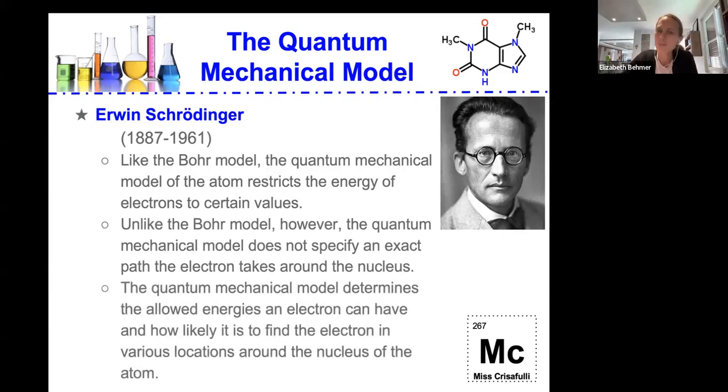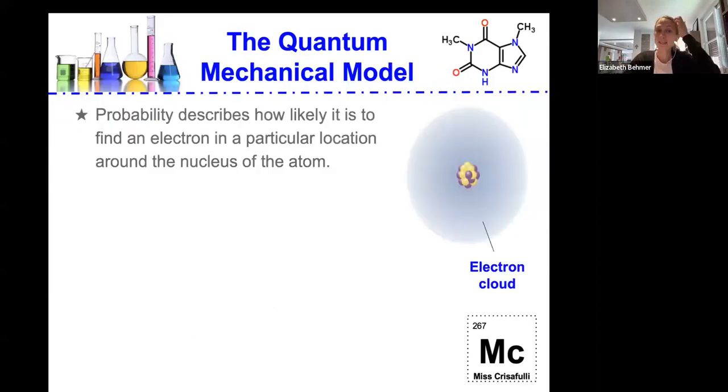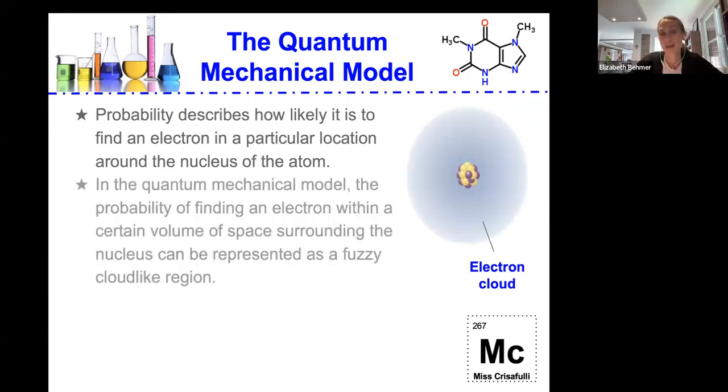So this quantum mechanical model determines the allowed energies an electron can have and how likely it is to find an electron in various locations around the nucleus of an atom. The probability of this model describes how likely it is to find an electron in a particular location around the nucleus of the atom.